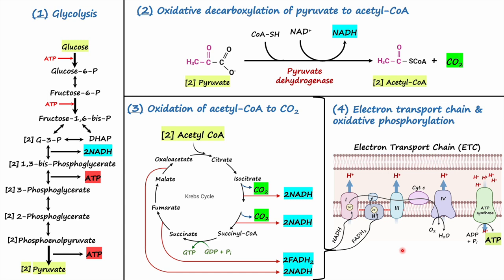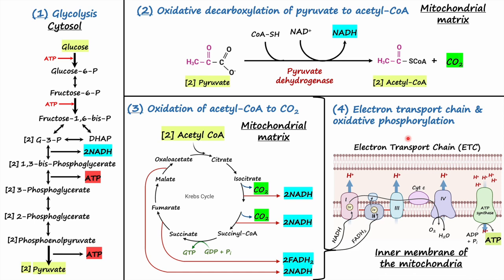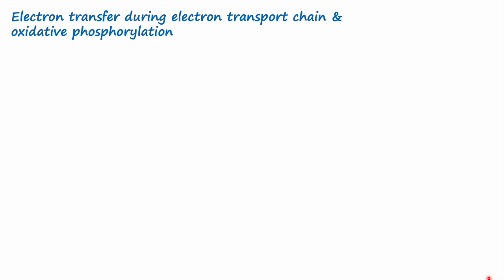It is also important to know the location of each of these stages. Glycolysis takes place in the cytosol, and pyruvate is oxidized to acetyl coenzyme A in the mitochondrial matrix, as is the oxidation of acetyl coenzyme A to carbon dioxide. The electron transport chain and oxidative phosphorylation take place in the inner membrane of the mitochondria. In my previous video I mentioned three stages because I combined the first and second stages, but here I have divided it into four stages to clarify any confusion.